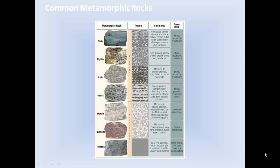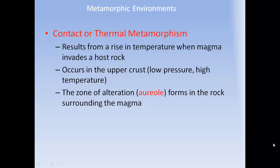Here is our common metamorphic rock chart. The texture column shows foliated rocks in the top half — slate, phyllite, schist, and gneiss — and non-foliated rocks in the bottom half: marble, quartzite, and hornfels.